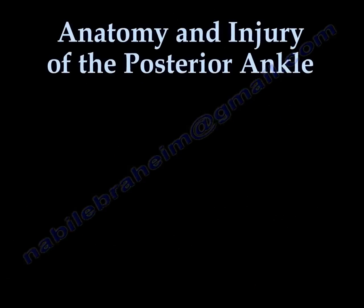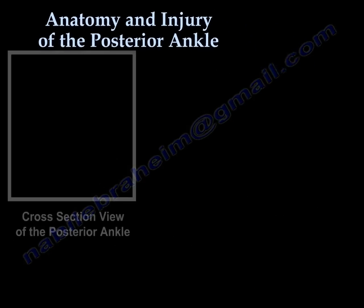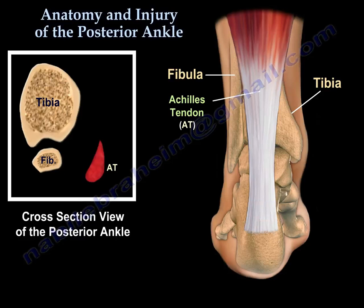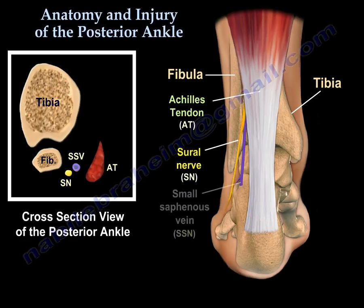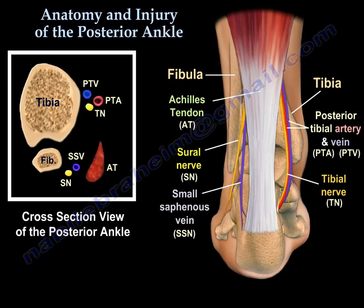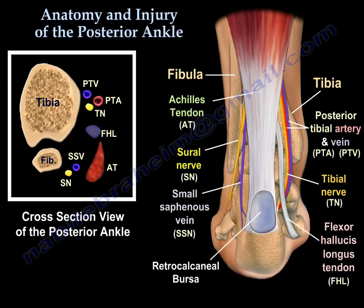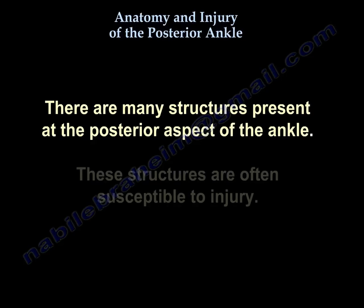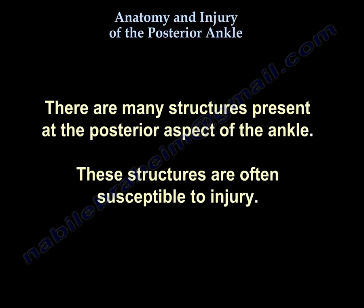Anatomy and injury of the posterior ankle. Here you can see the tibia, fibula, talus, and calcaneus. You can also see the Achilles tendon, the sural nerve, the small saphenous vein, the tibial nerve, the posterior tibial artery and vein, the flexor hallucis longus tendon, and the retrocalcaneal bursa. There are many structures present at the posterior aspect of the ankle that are often susceptible to injury.